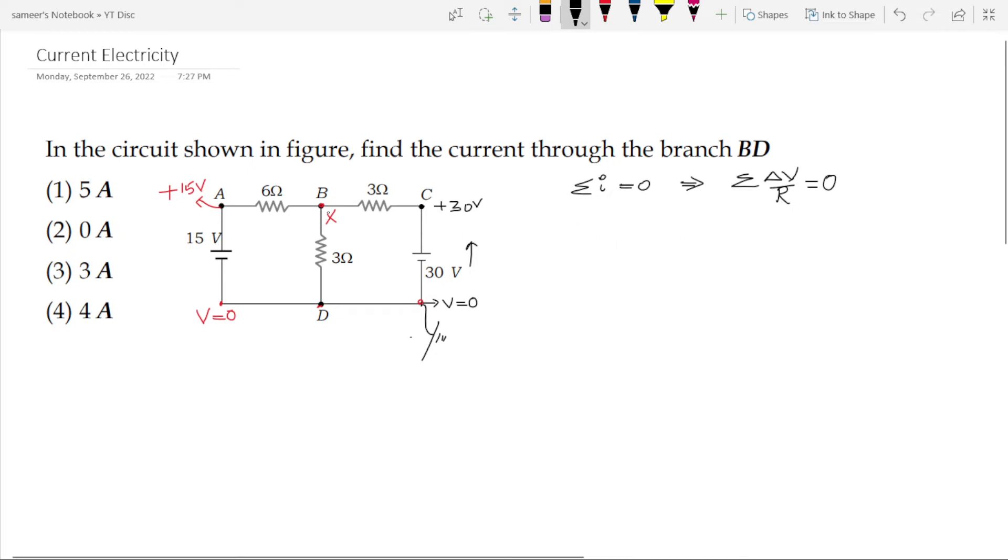Then you have delta v is x minus c which is x minus 30 upon 3 plus x minus 15 upon 6 which is here and x minus potential at d is again 0, it can be written as x minus 0 upon 3 is equal to 0.